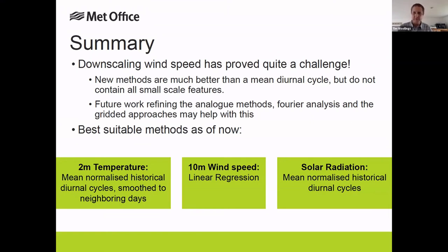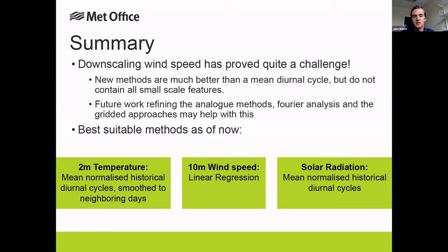A question from Laurent asking: for solar radiation, did you try using the clear sky radiation? No, not really — at least not on the national average scale, because we didn't need to. Just using the daily mean solar radiation and the historical diurnal cycle reproduced the hourly time series incredibly well with just that one variable. But no, we didn't look at that — maybe something that would be useful on a gridded scale.